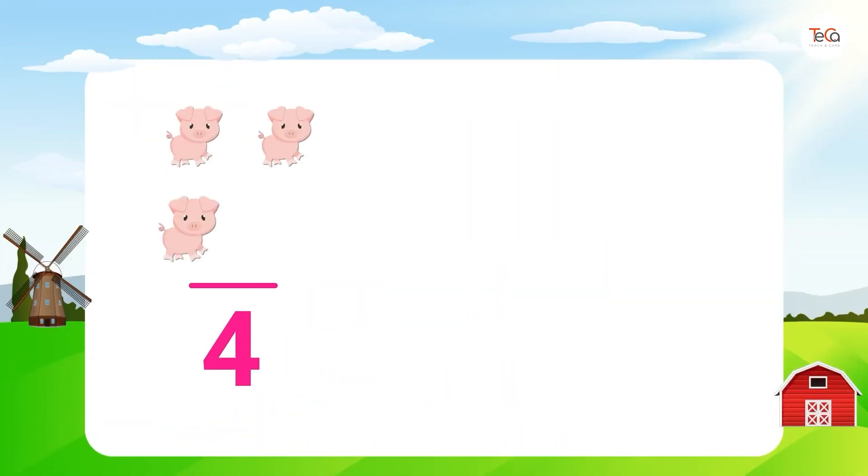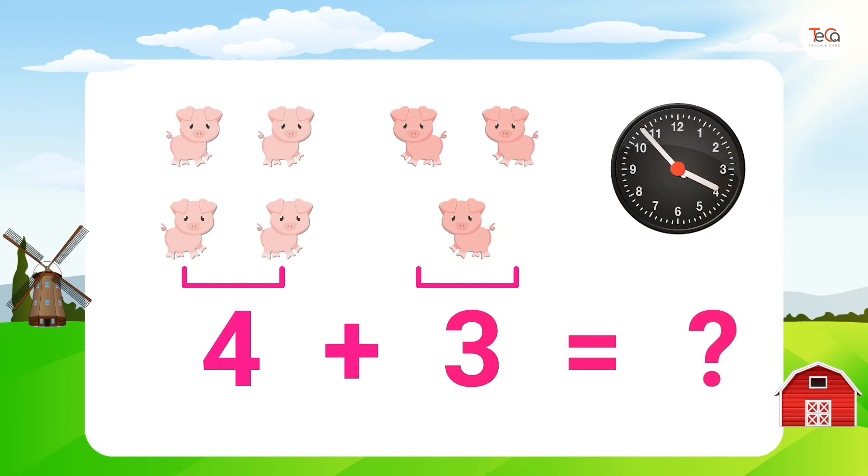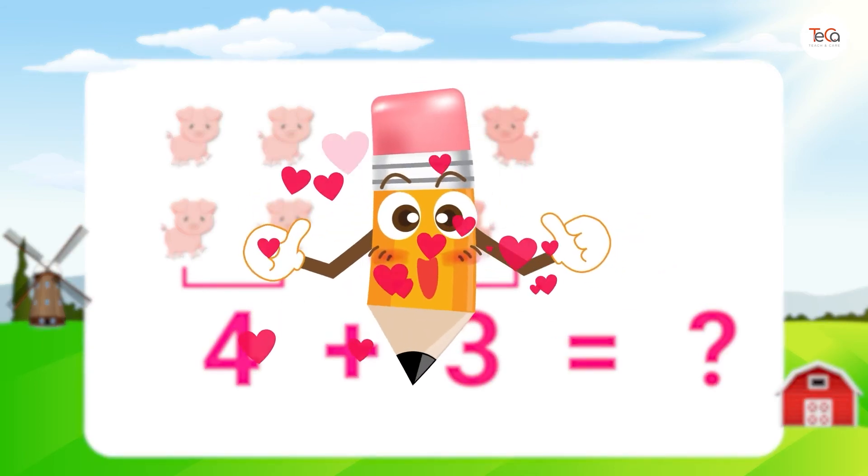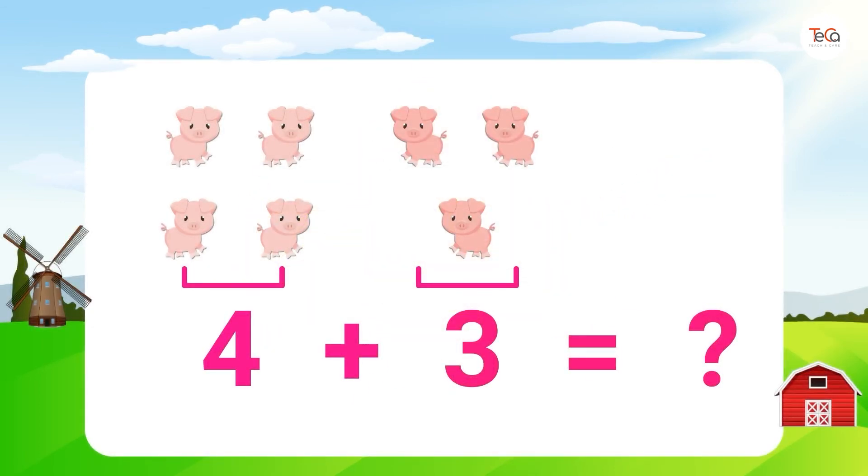Four pigs plus three pigs equals... Very good! Here we have one, two, three, four, five, six, seven pigs. So four plus three equals seven. Let me tell you this. The result of addition is called the sum. Here, seven is the sum.